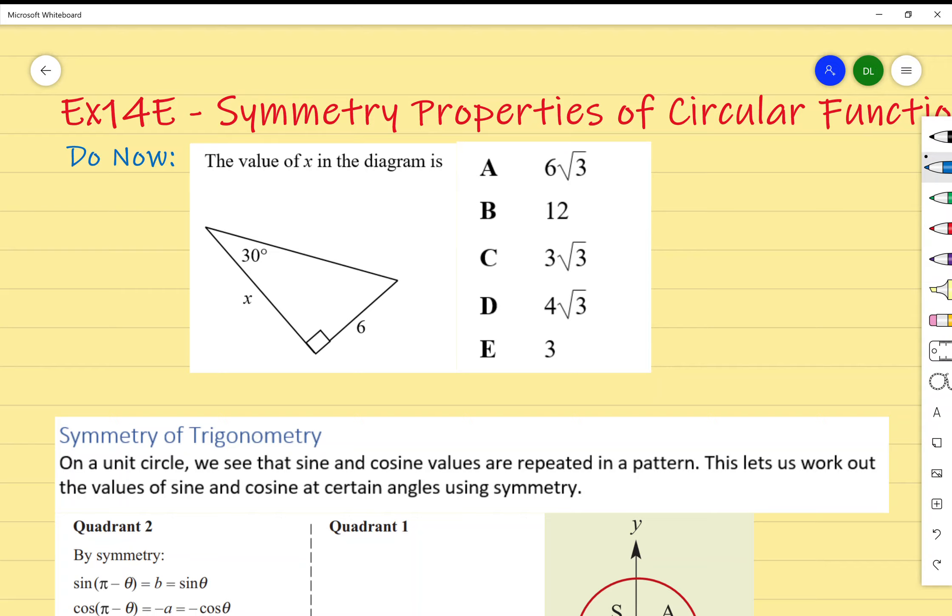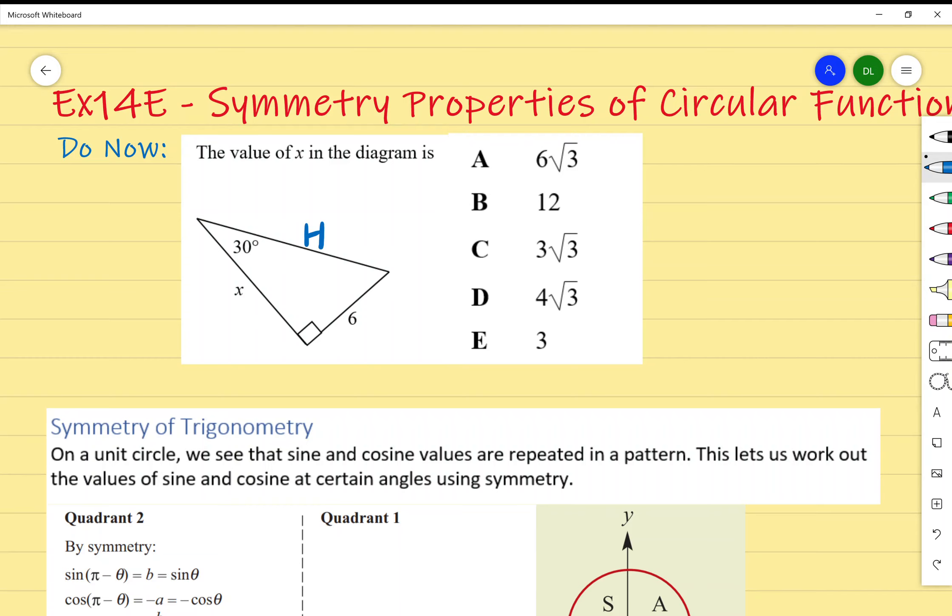This is just reviewing trigonometric ratios which you've done in previous years, namely year 9 and 10. First thing I do is identify and label the sides: A, O, and H. H being the hypotenuse, which is the longer side. A is the side attached or adjacent to my angle, and O is the opposite side of the angle.